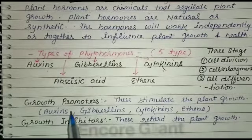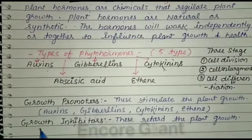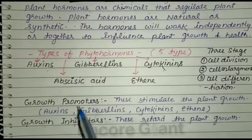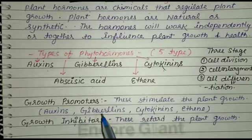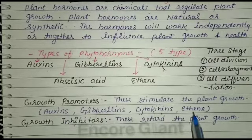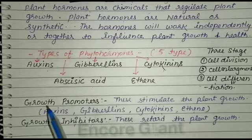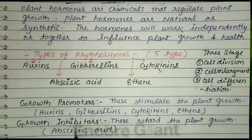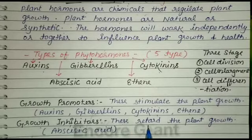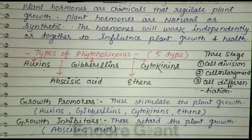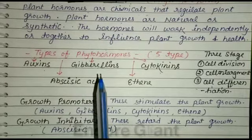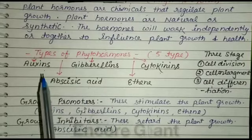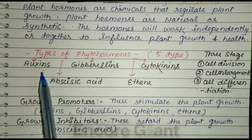On the basis of their behavior, plant hormones are divided into two categories: first, growth promoters, and second, growth inhibitors. Growth promoters stimulate plant growth — examples are auxin, gibberellins, cytokinin, and ethene. Growth inhibitors inhibit plant growth — example is abscisic acid.